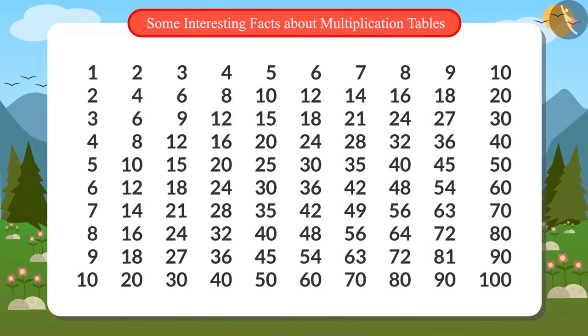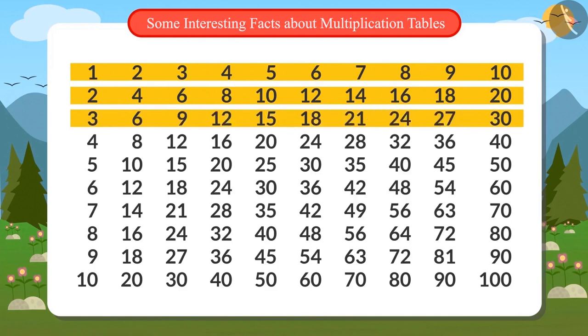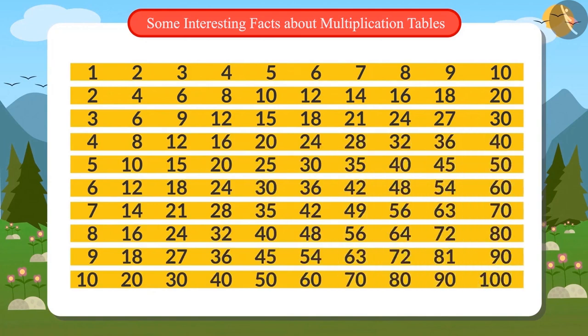The first line shows the table of 1. Second shows that of 2 and the third of 3. So, whichever line you read from left to right becomes the table of the number.